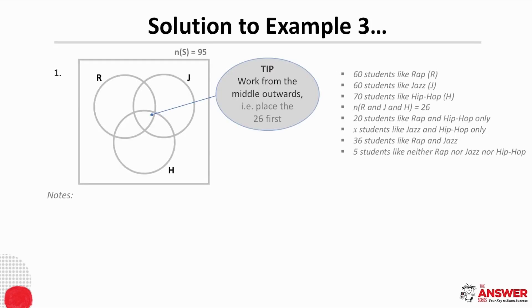So starting with the structure, there are three overlapping events in this sample space. Rap with the letter R, Jazz with the letter J and Hip Hop with the letter H. Also there were a total of 95 students in the poll. Then using the strategy to work from the middle outwards, it says here that the number in R and J and H is 26, which means the overlap or the intersection of all three events is 26. And so we place 26 here in the middle.